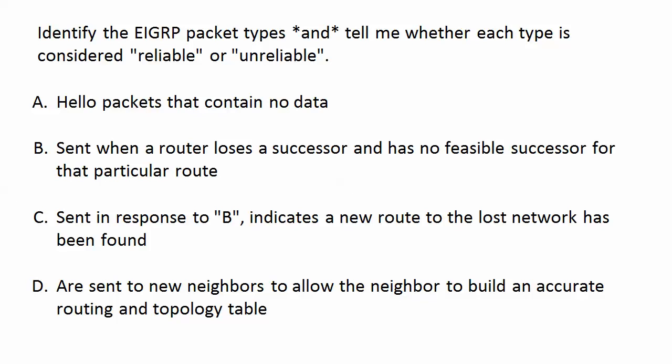As far as reliable and unreliable goes, this is kind of counterintuitive at first, because you would think that your most important packet types are your hellos and your ACKs, right? Because without those, you don't get your adjacency and you don't have to worry about feasible successors or successors because you don't have any adjacency to begin with. You would think those are considered reliable, but they're not — it's actually the opposite. Hellos and ACKs are considered unreliable, while the other three types — query, reply, and update — are considered reliable. It's good stuff to know for the exam.